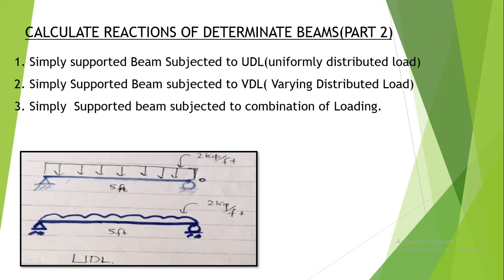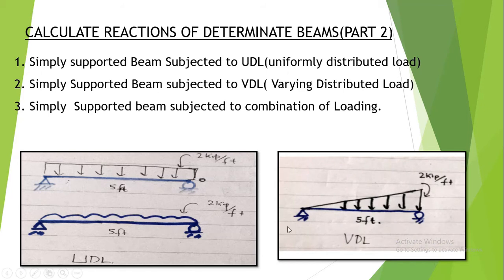How do we represent UDL? These are the two signs used to represent UDL. The intensity of the load — in the case of UDL, the intensity of loading does not change throughout the span of the beam; it remains the same. Whereas in the case of VDL, the intensity of the loading keeps on changing throughout the span.